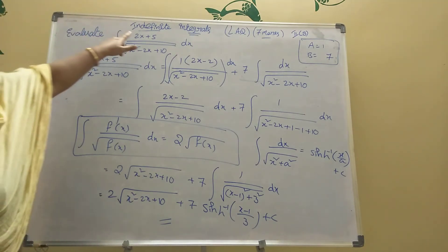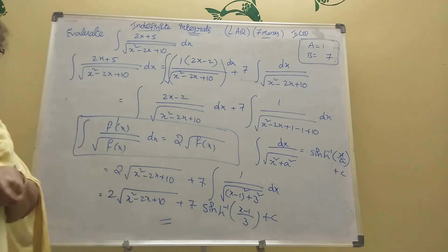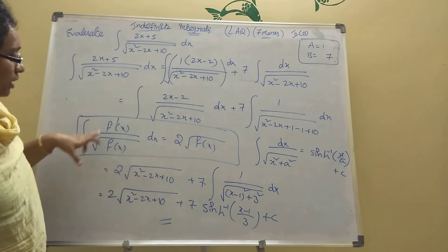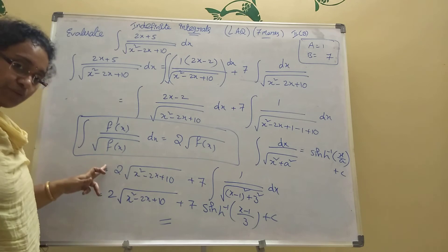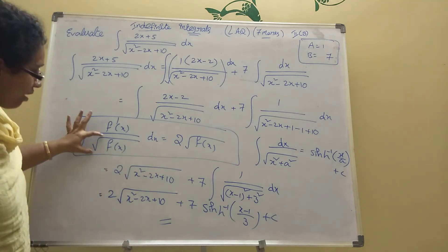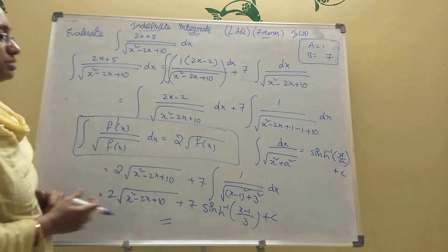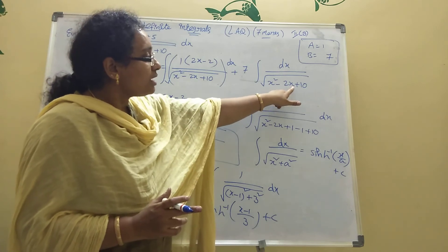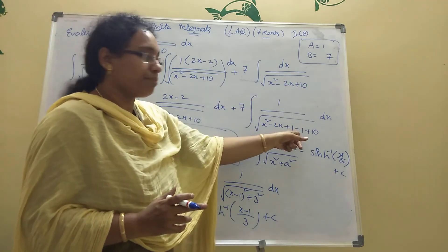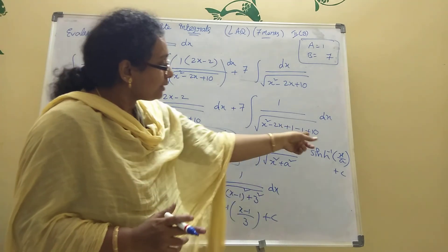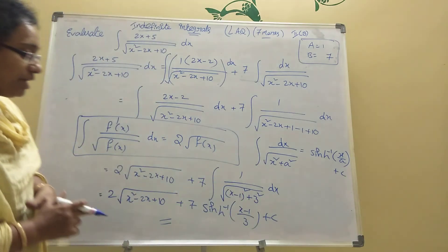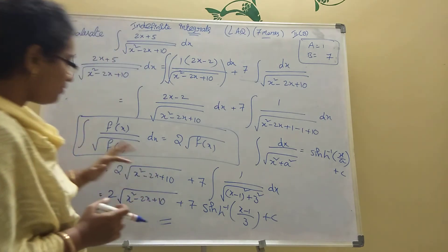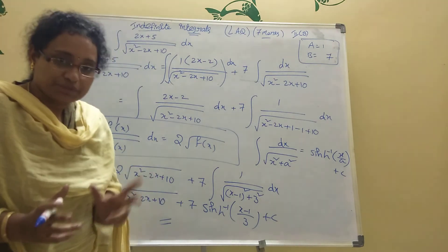See - the method: numerator equal to a into d/dx of denominator plus b. Apply a value 1, b value 7. Every time when root is there, integration of f'(x) divided by root of f(x) is 2 into root of f(x). Suppose no root, the formula is log mod f(x). Completing the square: x² minus 2x plus 1 minus 1, b value 1, adding and subtracting 1, giving (x minus 1)² easily. The formula: integration of dx by root of (x² plus a²) is sinh⁻¹(x/a). Keep watching, please subscribe my channel, share my channel, thank you.